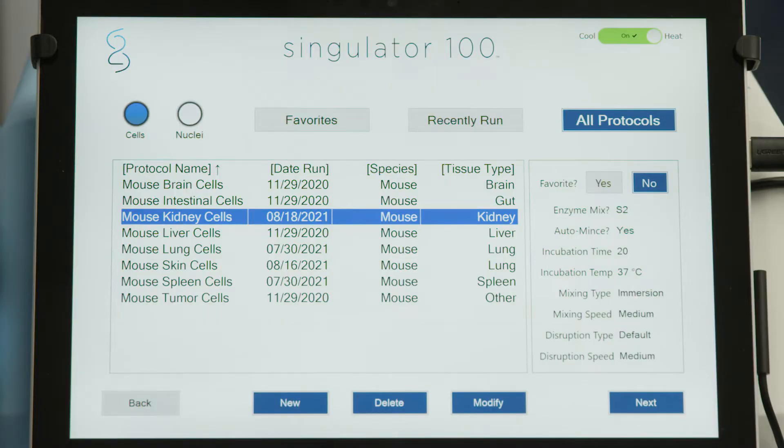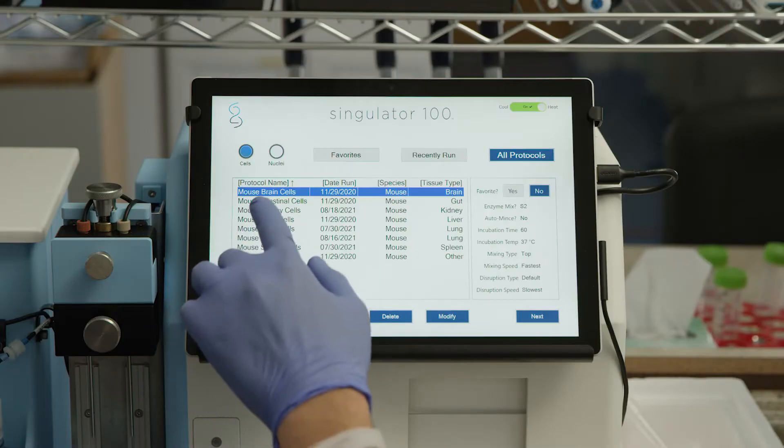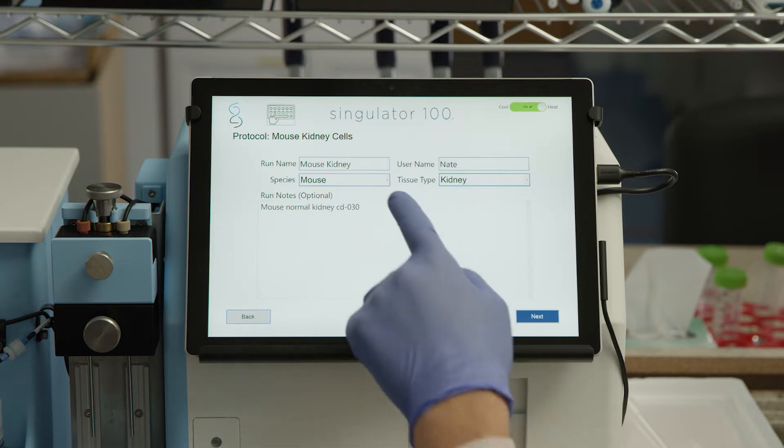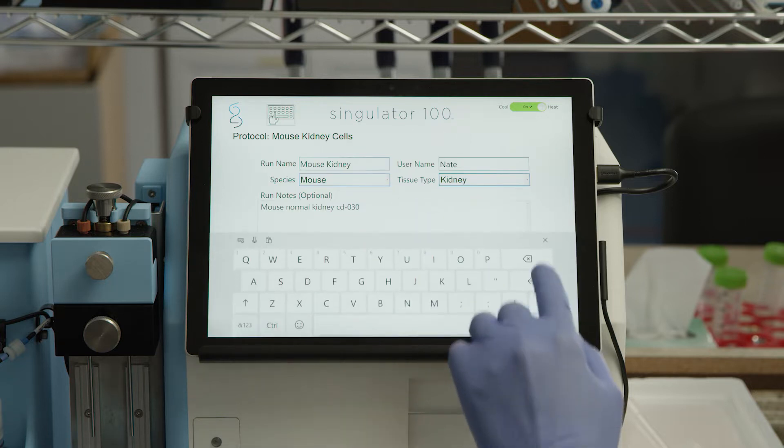Select the All Protocols tab to view all available protocols, or select from Favorites or Recently Run. Select the desired protocol and then select Next to proceed with the Run, or Modify to make changes to the default Run parameters.